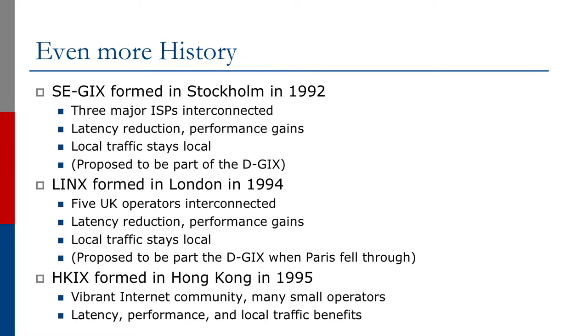The main feature of LINX at the time was — in the absence of any European telecoms deregulation — to reduce the huge cost of crossing the Atlantic Ocean to get to the US part of the Internet. In fact, LINX was proposed to be part of the DEGEX when the Paris option fell through, but as mentioned earlier, DEGEX never happened.